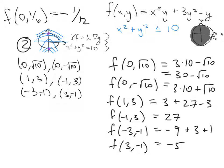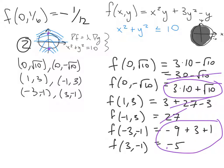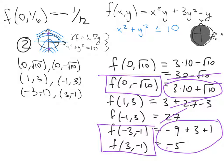Comparing all values: 30 − √10 is between −5 and 30 + √10, so it's not a candidate. 30 + √10 is larger than 27 and larger than −5, making it our global maximum. 27 is smaller than 30 + √10 and not a candidate for minimum. −5 is the boundary minimum, and it is smaller than the interior local minimum of −1/12, making it the global minimum. The global minimum of −5 is achieved at (3, −1) and (−3, −1), and the global maximum of 30 + √10 is achieved at (0, −√10).